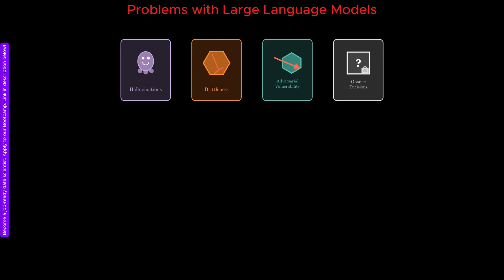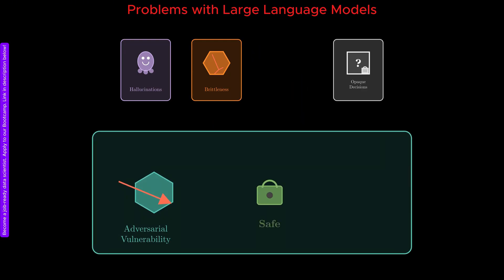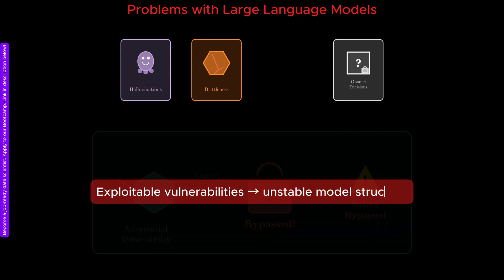In addition, current models are vulnerable to adversarial attacks. Carefully designed inputs can bypass safety mechanisms, trigger unintended behaviors, or elicit outputs that violate usage policies. These vulnerabilities are not merely superficial. They reveal that the model's internal structure contains unstable regions that can be exploited.